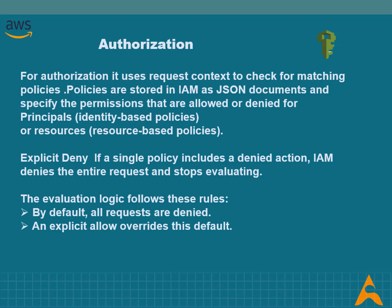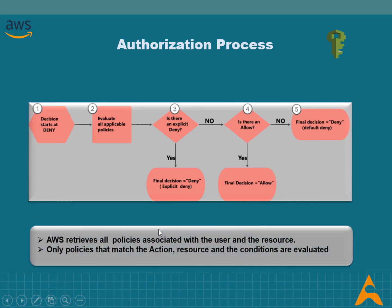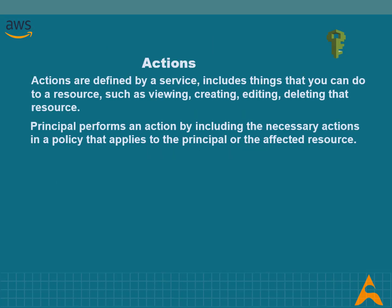If a single policy includes a denied action, IAM denies the entire request and stops evaluating — this is called an explicit deny. IAM authorizes your request only if every part of your request is allowed by the matching policies. The evaluation logic follows these rules: by default all requests are denied; an explicit allow overrides this default; an explicit deny overrides any allows. Note that by default only the AWS root user has access to all resources in the account.